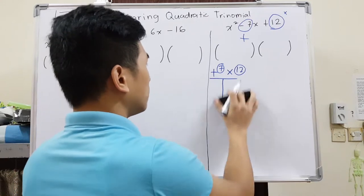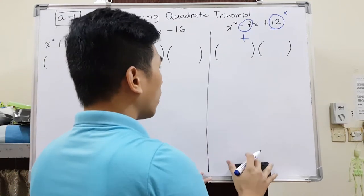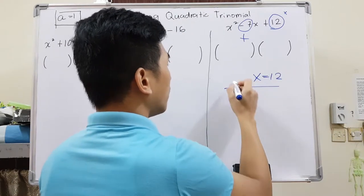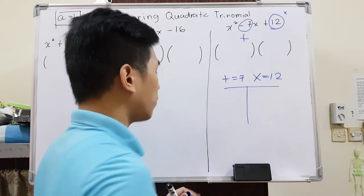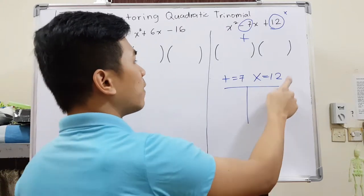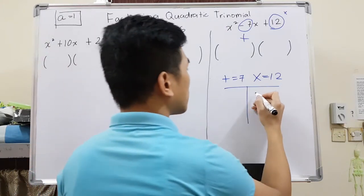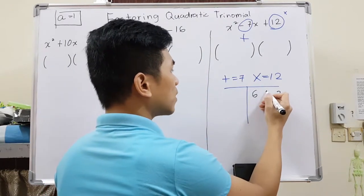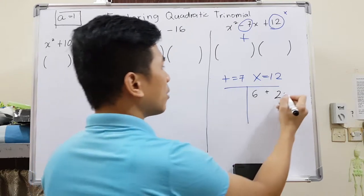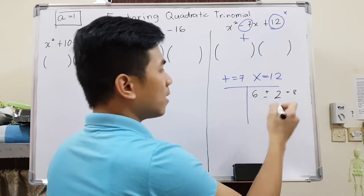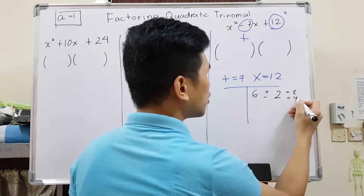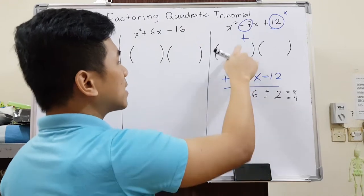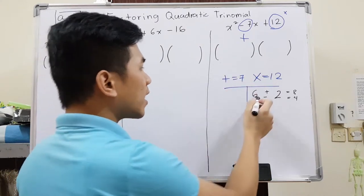I will write something that multiplies to 12 and that adds up to 7. I am going to think of two numbers. Let's start with any factors of 12, so it could be 6 and 2. I'm going to ask myself, if I add this, what will I get? If I add this, I will get 8. If I subtract this, I will get 4. You can ignore the signs, just normally subtract or add them. But I need 7, so it's not going to work. So 6 times 2 will not work.